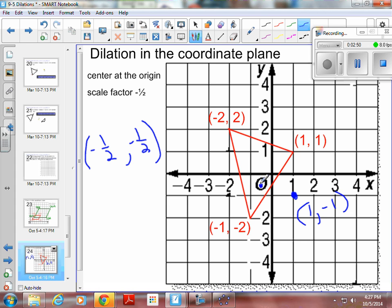And then this point down here, a negative one-half times a negative one gives you a positive one-half, and a negative one-half times a positive negative two will give you a positive one. So there's my last point, one-half, one, which is up here.